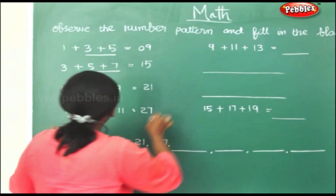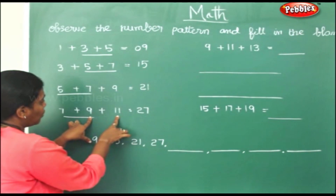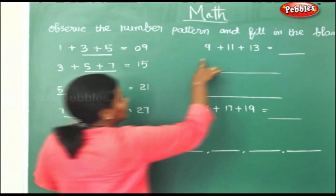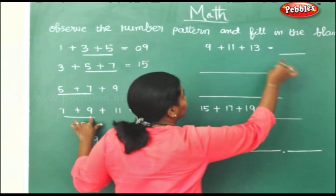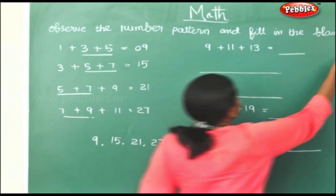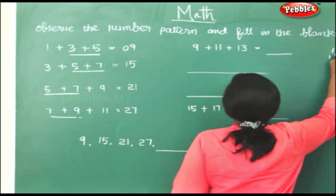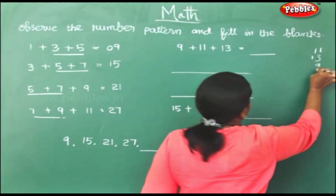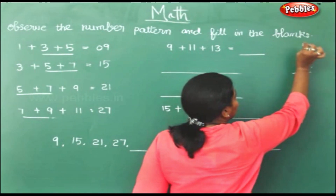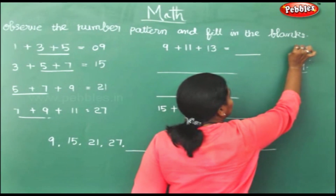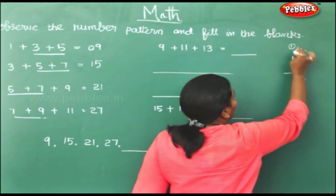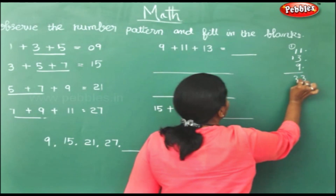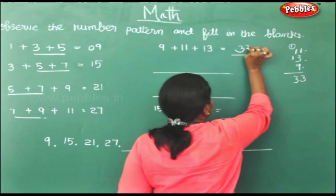You sum up all these and you will get 21. Next they have taken 7 and 9 plus the next odd number, and you sum up all this to get 27. So what have they done next? The last two odd numbers 9 and 11, plus the next odd number. You sum up 11, 13, 9 — that gives 33.